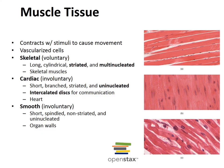Smooth muscle has tapered cells with a large central nucleus and no striations. It is found in the walls of hollow organs such as the stomach, uterus, and blood vessel walls, and functions to propel substances along internal passageways under involuntary control. Cardiac muscle is located in the atria, ventricles, and walls of the large vessels of the heart. It contains branched cells with striations, one central nucleus per cell, and intercalated discs — thickenings of the cell membrane allowing communication between cells. Cardiac muscle contracts to propel blood into the circulation and is under involuntary control.